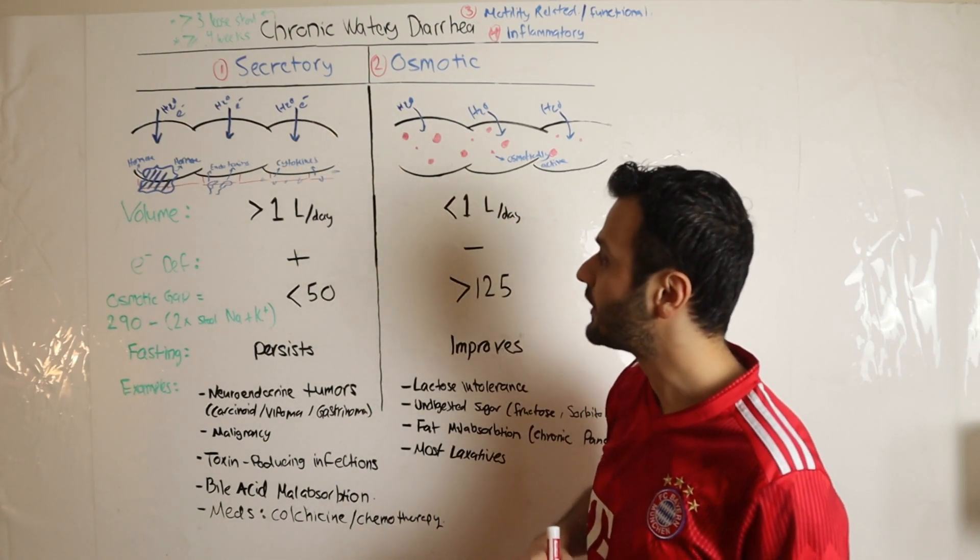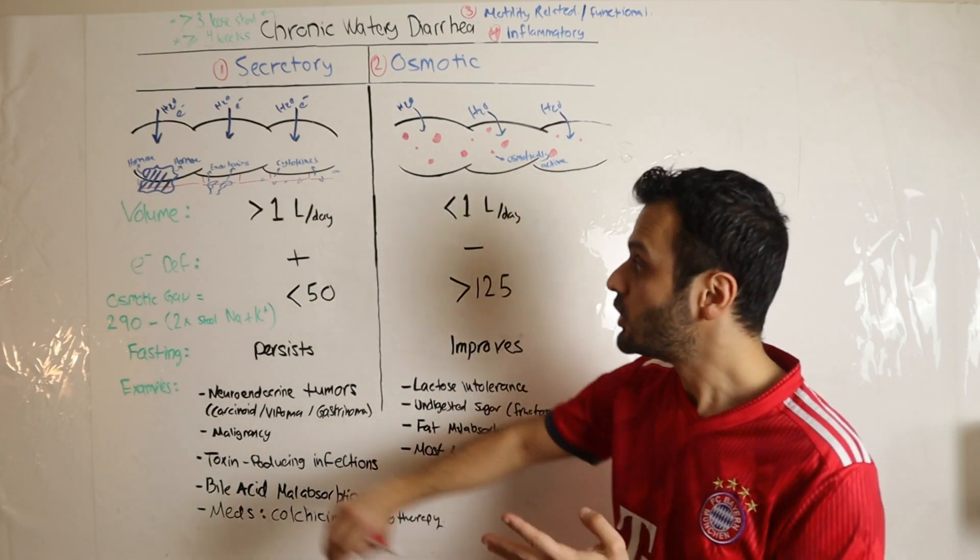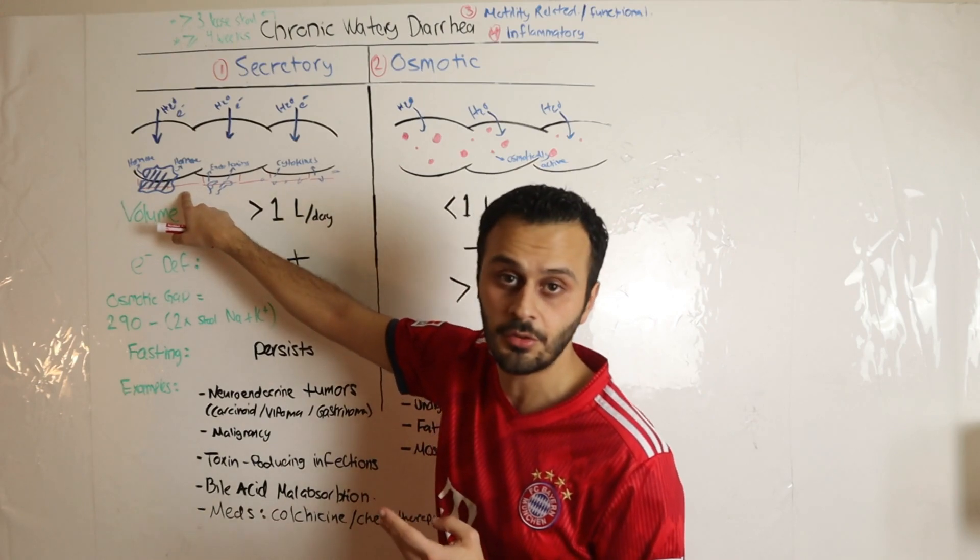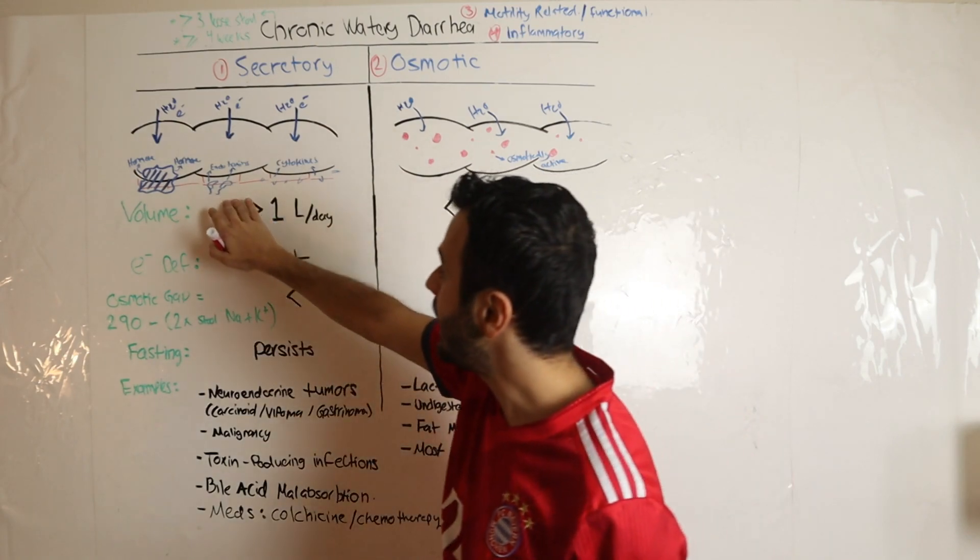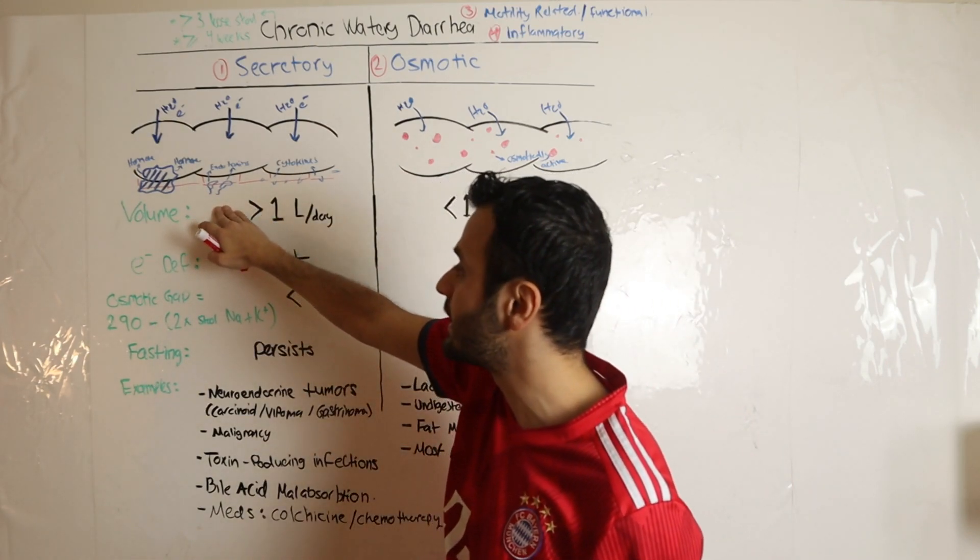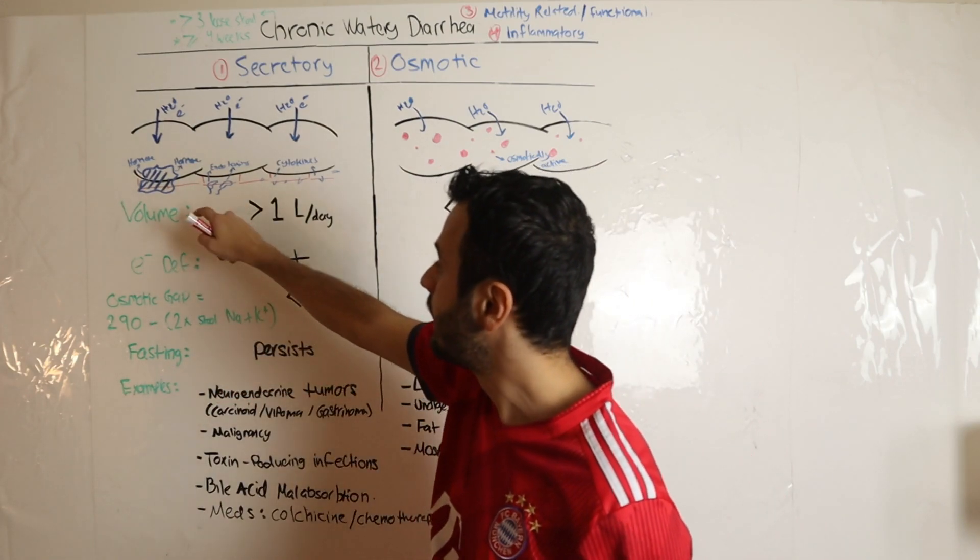Now, the source of this constant secretion could be three different things. You could be having a neuroendocrine tumor releasing a large amount of hormones, or you could be having an infection such as bacterial, protozoal, or viral infection that releases certain toxins.